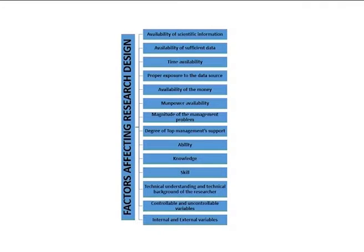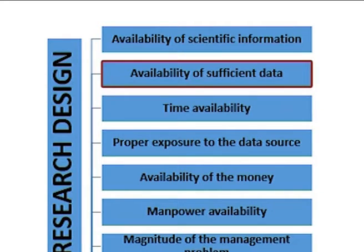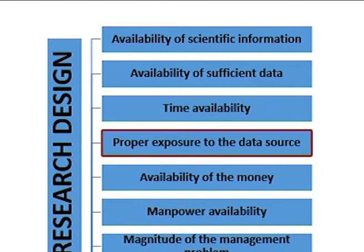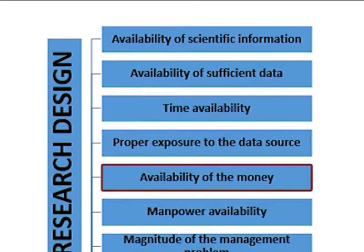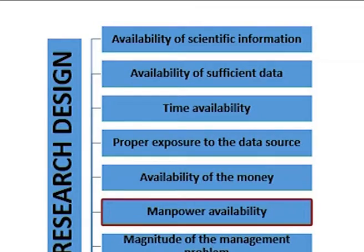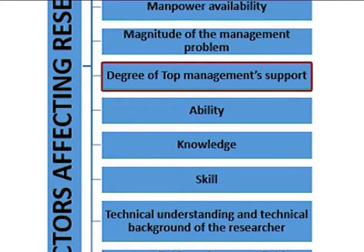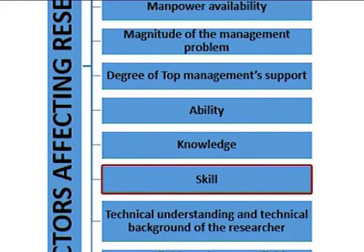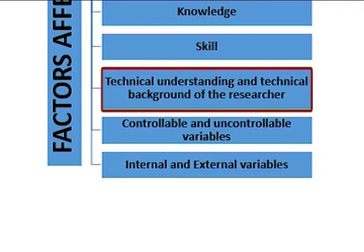There are a number of factors that affect the research design, such as availability of scientific information, availability of sufficient data, time availability, proper exposure to the data source, magnitude of the management problem, degree of top management support, ability, knowledge, skill, technical understanding and technical background of the researcher, controllable and uncontrollable variables, and internal and external variables.